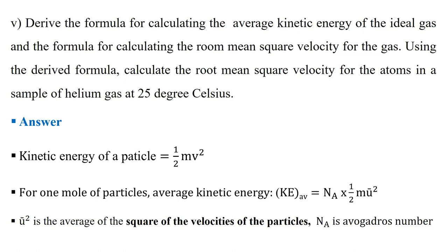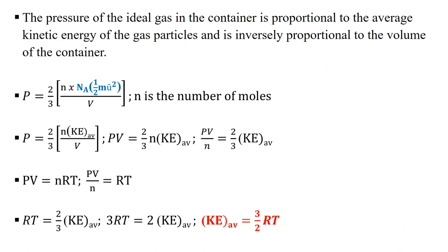The pressure of an ideal gas in a container is directly proportional to this average kinetic energy and inversely proportional to the volume of the container. The kinetic energy causes particles to move and exert pressure on the container walls. The formula for the average kinetic energy shown above demonstrates that pressure is directly proportional to average kinetic energy and inversely proportional to volume.